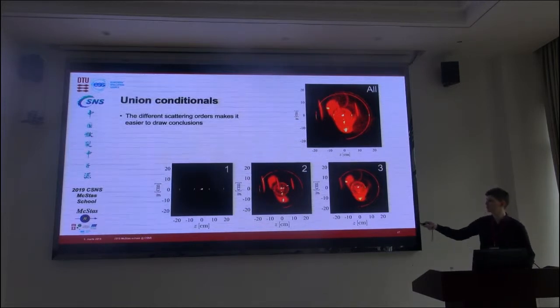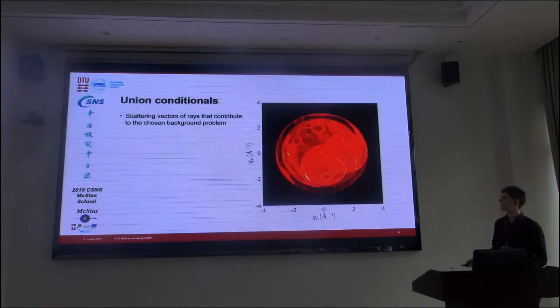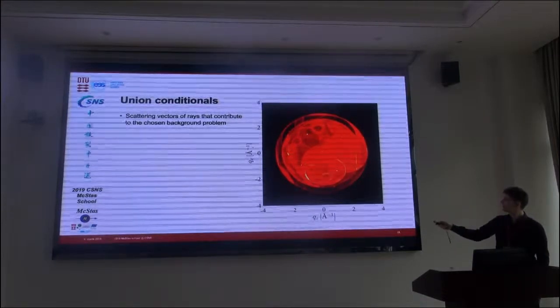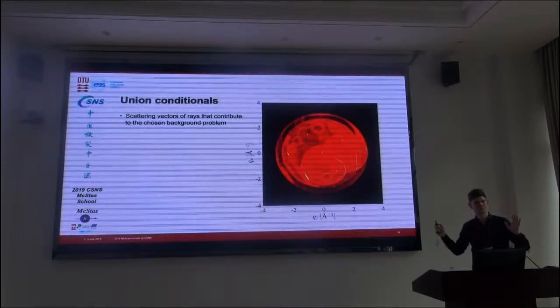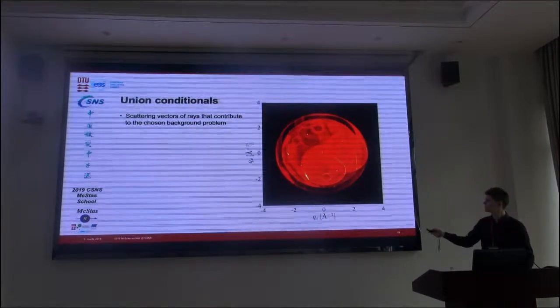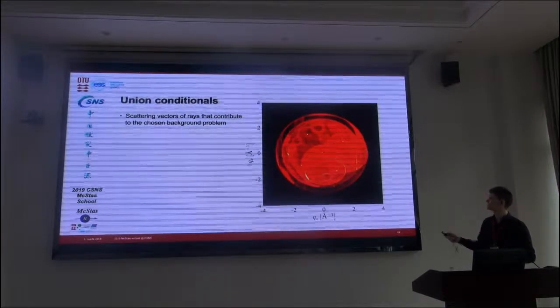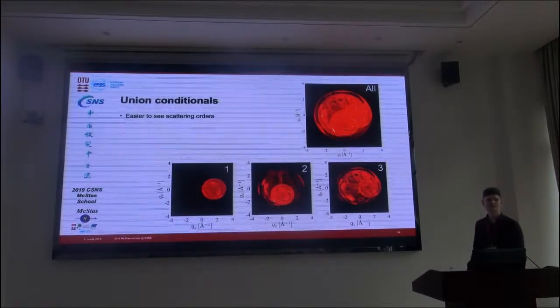We can then look at the reciprocal space. We see that, okay, this Bragg peak certainly is the brightest point. But there's also this part of some aluminum rings somewhere that seems to be important for it. Let's look at the scattering orders.